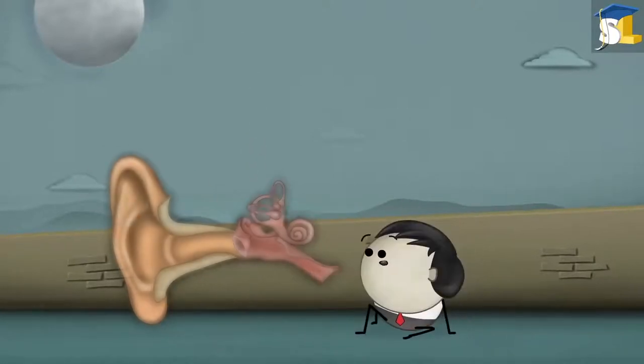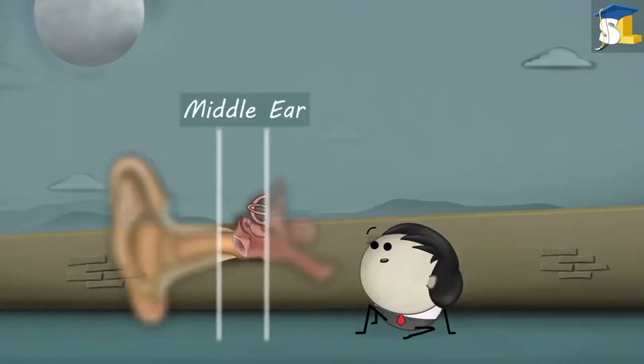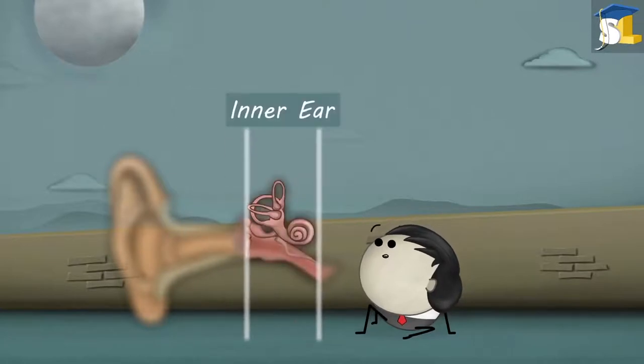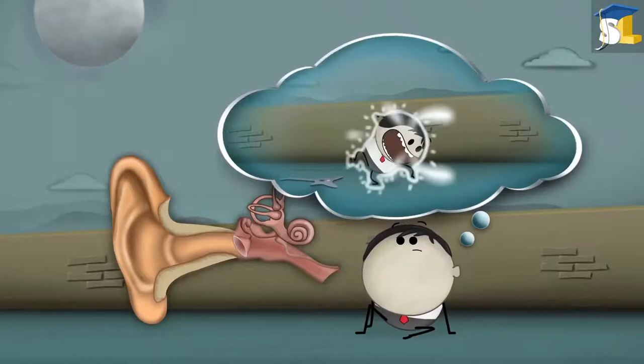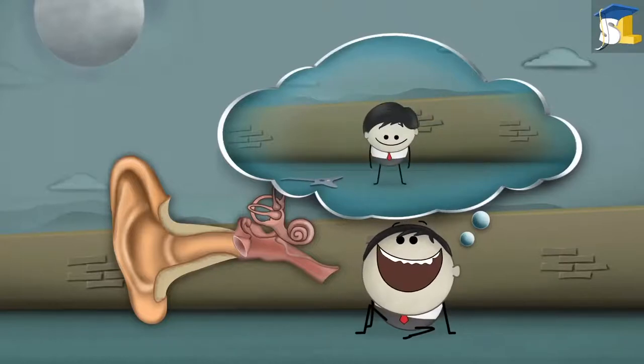This happens because there is a connection between our ears and body balance. Our ear consists of three parts: outer ear, middle ear, and inner ear. Our inner ear works in sync with our eyes and muscles, helping us maintain balance while we are doing various activities.